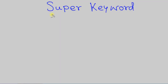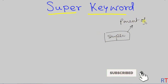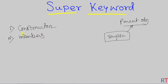In this video we're going to talk about the super keyword in Java. Super is a reserved keyword in Java that refers to the parent class object. It can be used to invoke the parent class constructor, or also to access the members of the parent class.